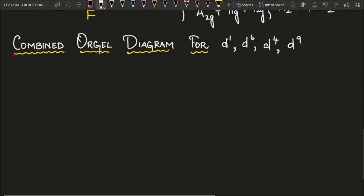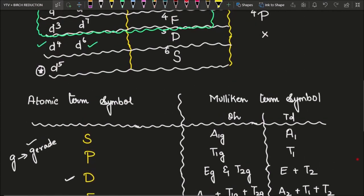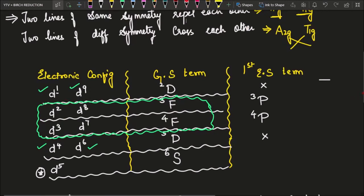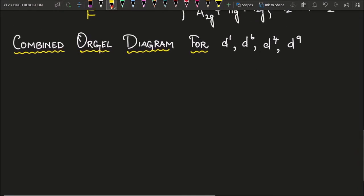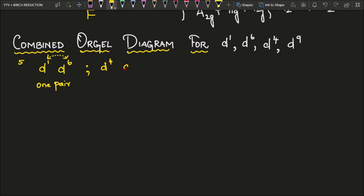The first graph is the combined Orgel diagram for D1, D6, D4, and D9. You have to remember them in pairs: D1 and D6 form one pair, D4 and D9 form the second pair. The trick to remember pairing: just take the difference between the two numbers — if the magnitude is 5, they form a pair. So 6 minus 1 equals 5 (D1, D6), and 9 minus 4 equals 5 (D4, D9).